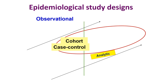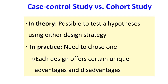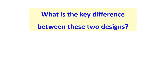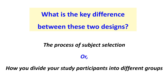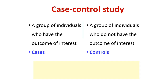That's why cohort and case-control studies are called analytic studies, even though they are observational — investigators just observe and do not intervene. In theory we can apply either design to test a hypothesis, but in practice we need to choose one because each has unique advantages and disadvantages. The key difference lies in how we divide study participants into different groups.